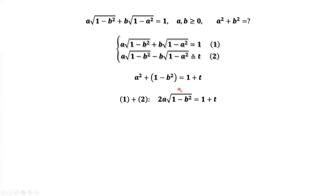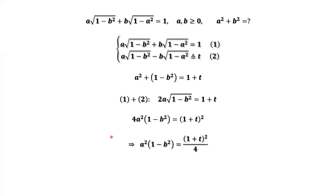We want to get rid of the square root. Squaring both sides, then dividing both sides by 4, we have a squared times (1 minus b squared) equals (1 plus t) squared divided by 4. This is our second result.